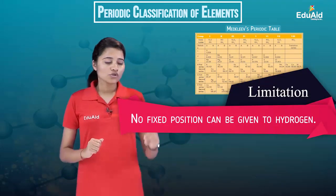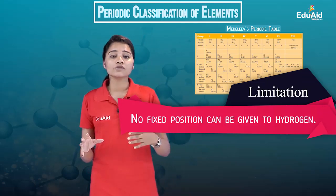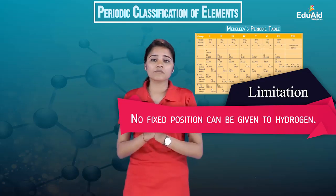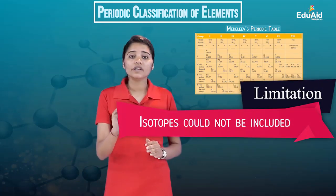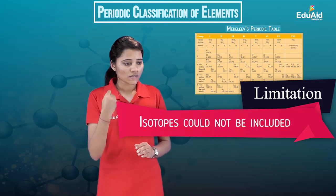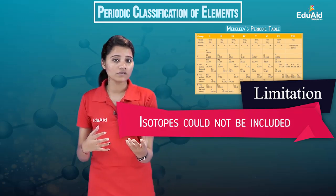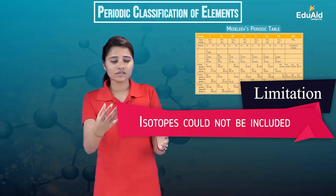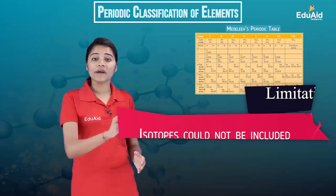The limitations of Mendeleev's table: due to the similarity of hydrogen with the elements of Group 1 (alkali metals) and also with the elements of Group 17 (halogens), the position of hydrogen in Mendeleev's periodic table could not be fixed. Also, isotopes could not be included in the Mendeleev periodic table, because isotopes of an atom have different atomic masses but similar properties — since they have similar properties they should be placed together, but since they have different atomic masses they should have different positions, and these two facts contradict each other.